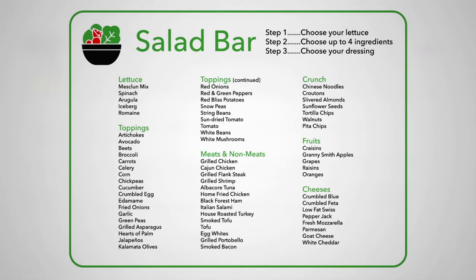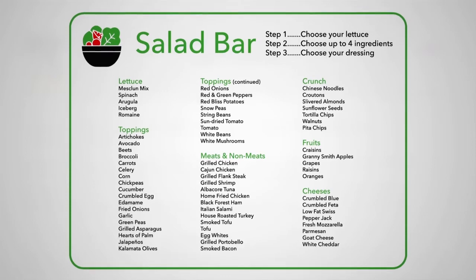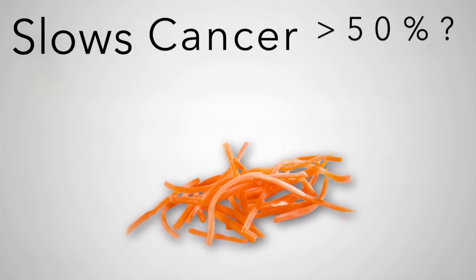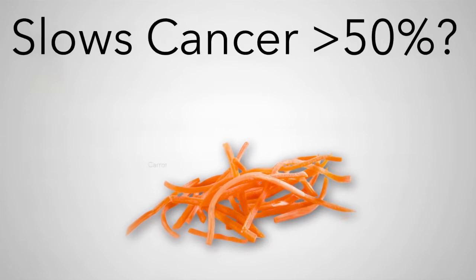What is the importance of vegetables? Vegetables are an important source of many nutrients, including potassium, dietary fiber, folate, folic acid, vitamin A, and vitamin C. A diet rich in potassium may help you maintain healthy blood pressure.